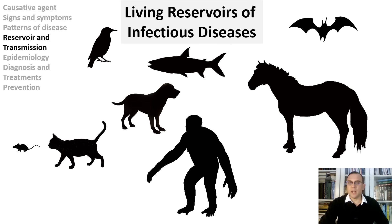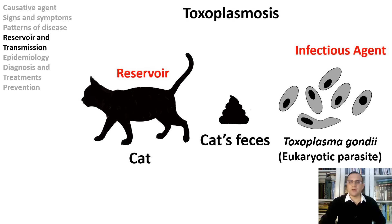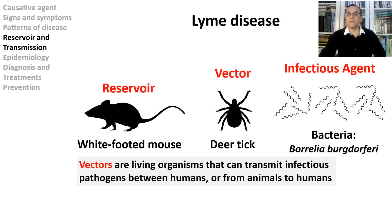Both wild and domestic animals are living reservoirs of microorganisms that can cause human diseases. Toxoplasmosis is caused by Toxoplasma gondii, a protist and eukaryotic parasite. People often get the infection from contact with cat's feces. The parasite can pass to a baby during pregnancy. Most people infected with the parasite do not have symptoms, but the disease is more serious in people with weakened immunity. The white-footed mouse is the reservoir for Lyme disease, and the tick is the vector — the one that spreads the infection. The infectious agent is a corkscrew-shaped bacterium called Borrelia burgdorferi.